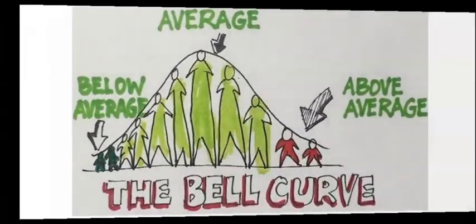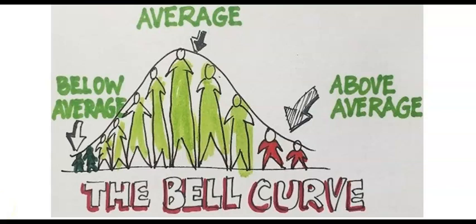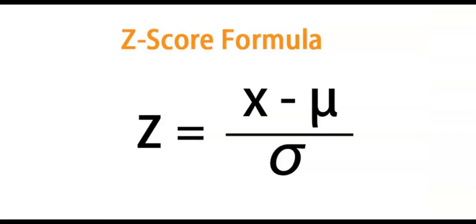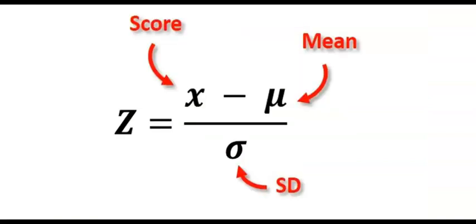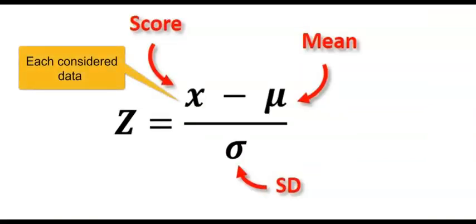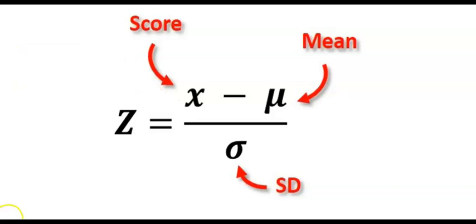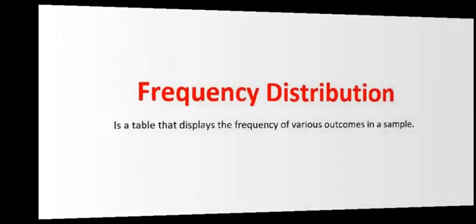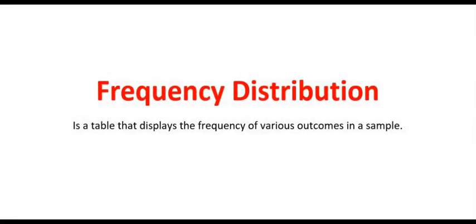Standard deviation shows how far each value is away from the mean. Considering an exam score, the standard deviation shows how far away each student's grade is from the average — that is, how spread out the exam grades are. The z-score formula is simply the difference between the score and the mean, divided by the standard deviation.